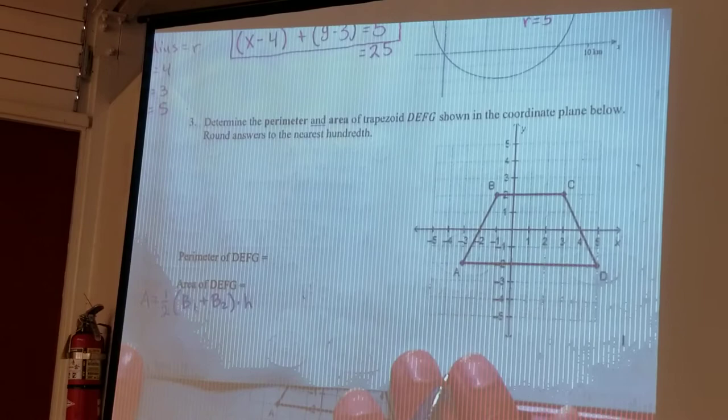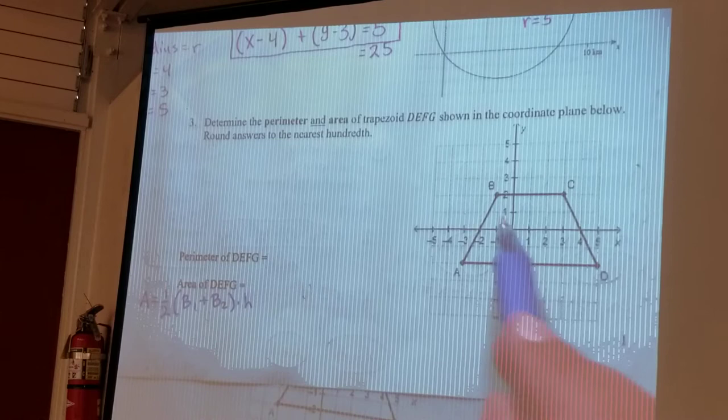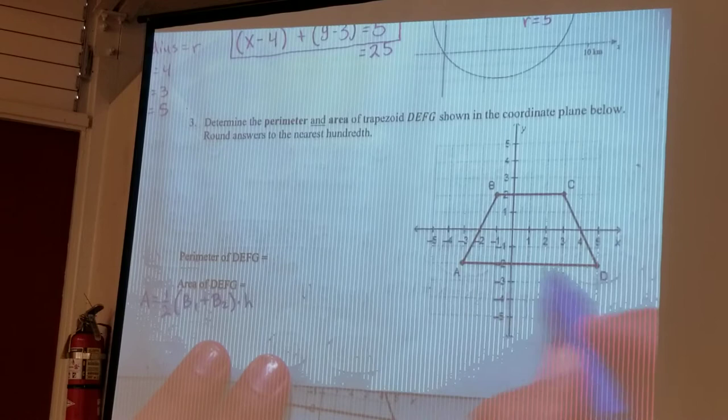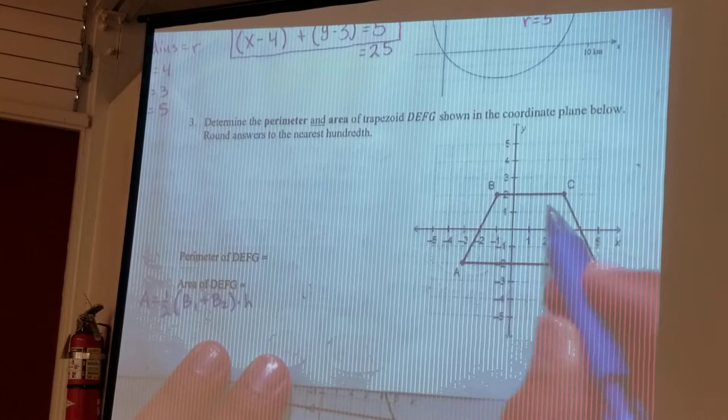And if we look at the trapezoid over here we can actually find base one, base two, and the height just by counting in the trapezoid. So from here the base one is the bottom line and the base two is the top line up here.